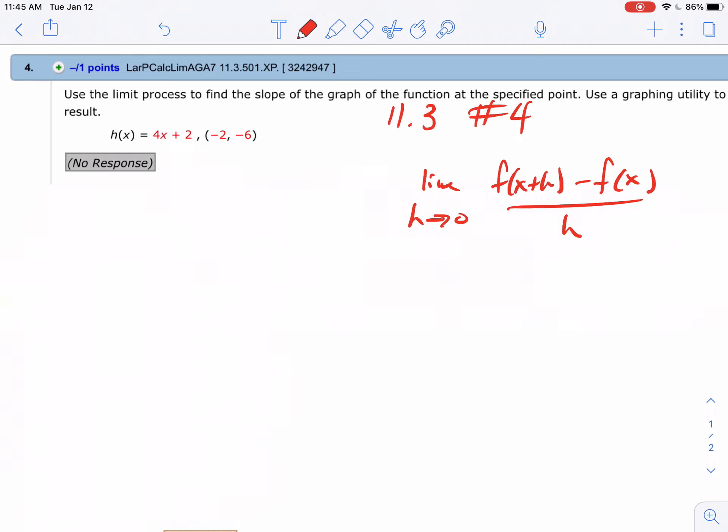Problem 11.3 number 4 asks us to find the slope. We need to use the x plus h rule to find what we call the derivative or tangent line, and then we'll use the given point.